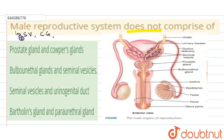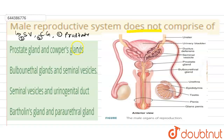So that means two seminal vesicles, two Cowper's glands, and one single prostate gland are present. This makes up the male accessory reproductive glands. One penis is also present, and the opening of the penis is called the urino-genital opening because it releases both urine and genital secretion.